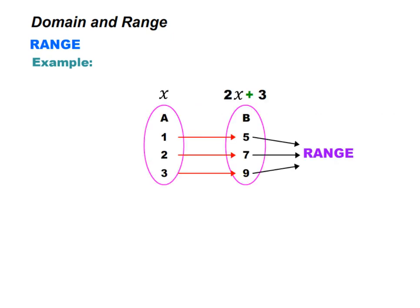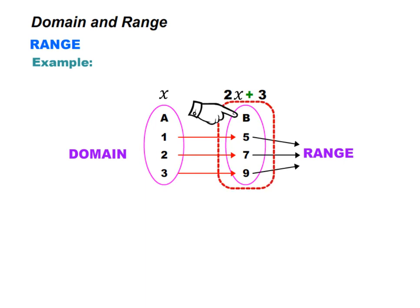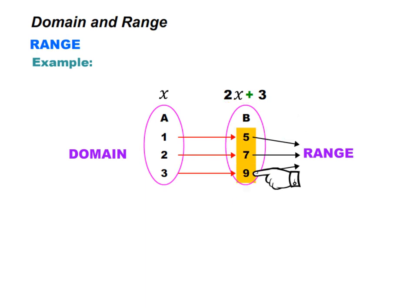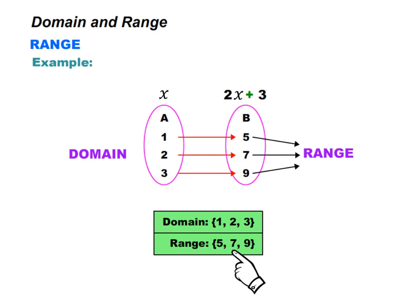Let us look at this example where we are given two sets: set A and set B. Set A is the domain. The set of elements that get pointed to in B are the range — 5, 7, and 9 are the actual values produced by the function. So our domain can be listed as 1, 2, and 3, and our range can be listed as 5, 7, and 9.